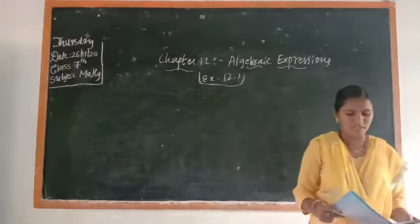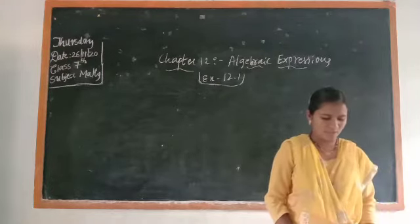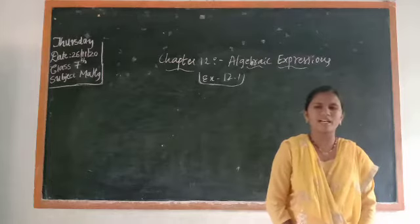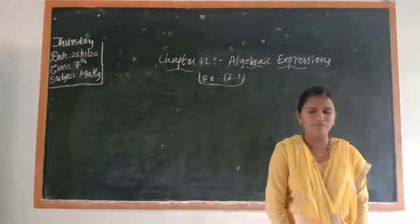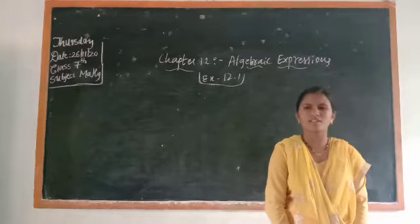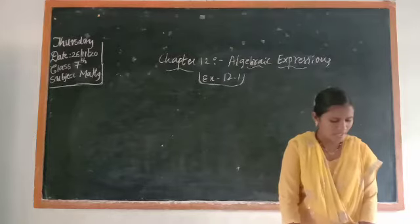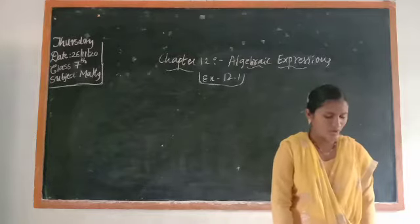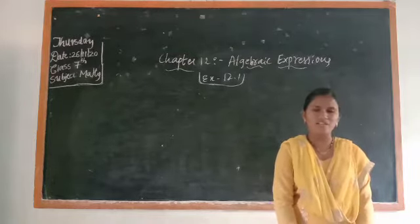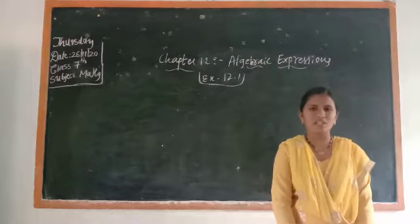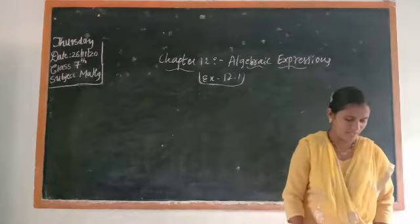You already know variables — we take variables from a to z in alphabetical order. Constants means numbers. Arithmetic operations — you already know: addition, subtraction, multiplication, and division.